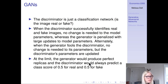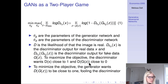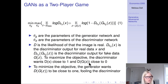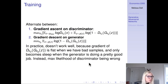When the generator does fool the discriminator, no change is needed to its parameters, but the discriminator's parameters need to be updated. At the limit, the generator would produce perfect replicas and the discriminator would always predict a class score of 0.5 for real and 0.5 for fake. We can think of GANs as a two-player game where we have parameters theta-G from the generator and theta-D from the discriminator, where D is the likelihood that the image is real. To maximize the objective, the discriminator wants D(X) close to 1 and D(G(Z)) close to 0; to minimize it, the generator wants D(G(Z)) close to 1, fooling the discriminator. We alternate between gradient ascent on the discriminator and gradient descent on the generator.